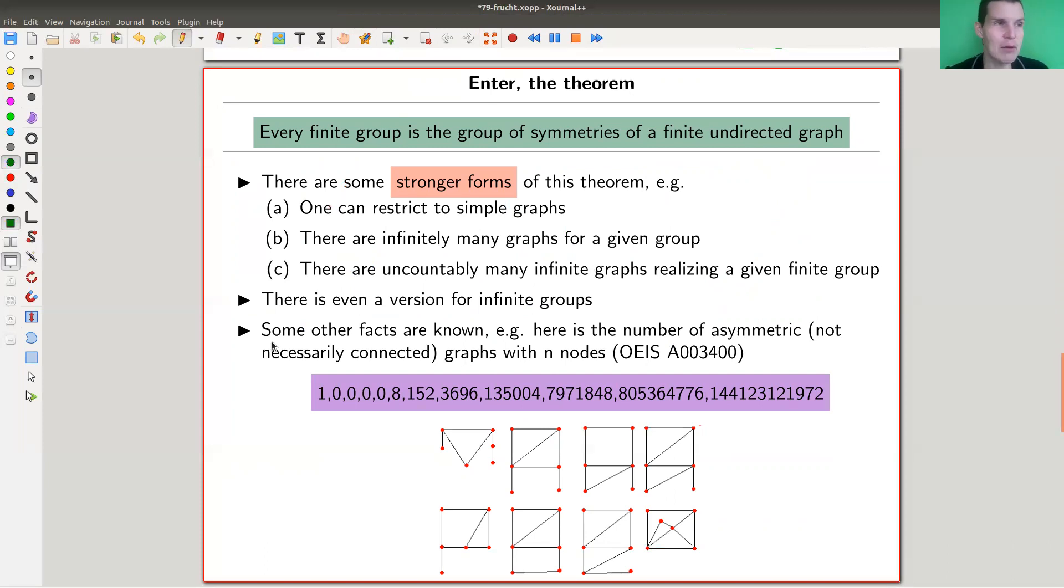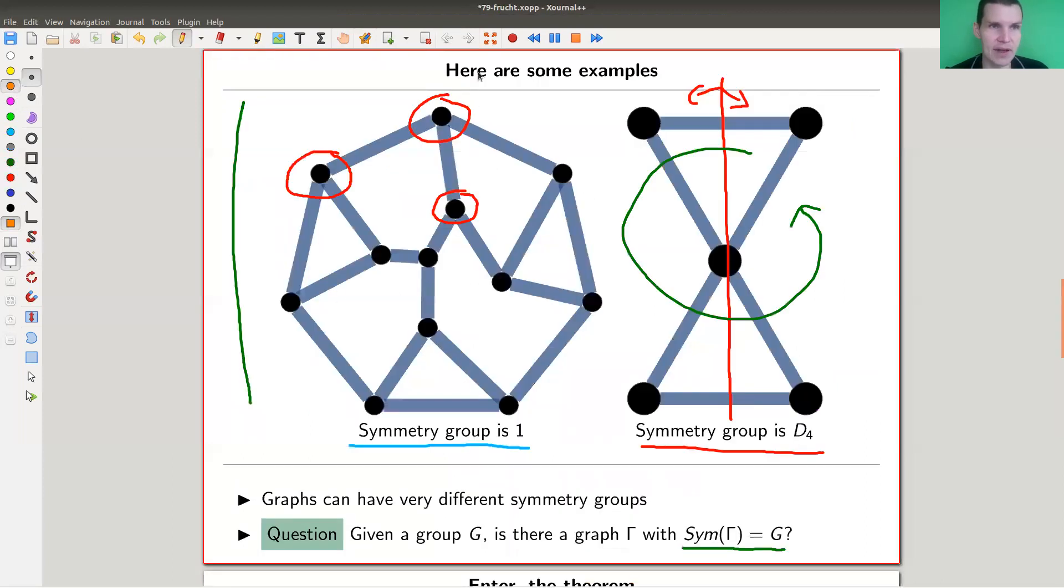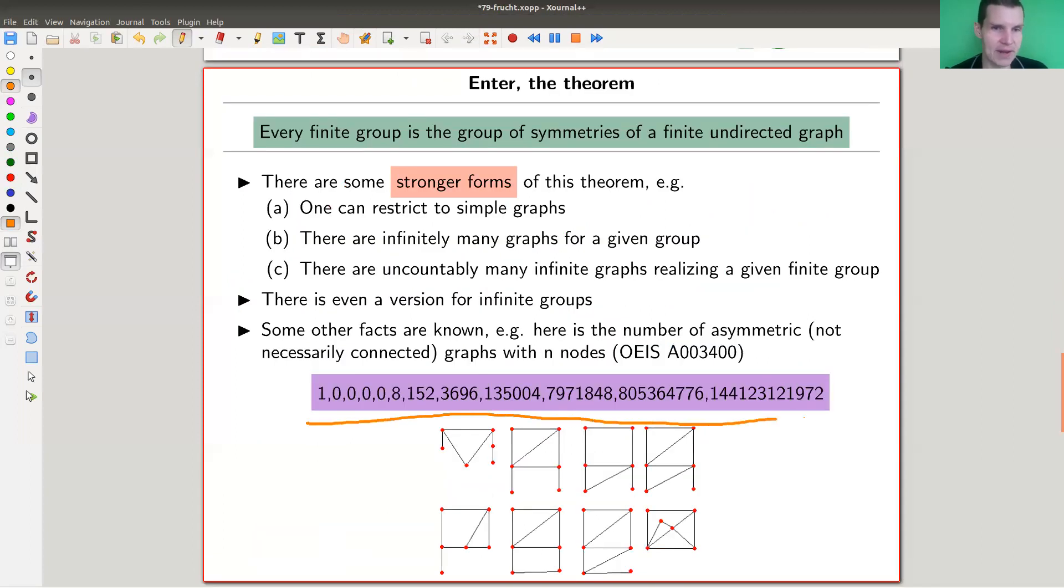So here is the number of graphs which are asymmetric, like this one here, asymmetric. It has quite a few vertices, as you can see, and if you list the number of graphs that are asymmetric, well, certainly a point is asymmetric. Okay, fine. So symmetry group of a point is just the trivial group. But then you need to go to six vertices to see the first asymmetric graphs, and you have eight of them, and they're just listed here.